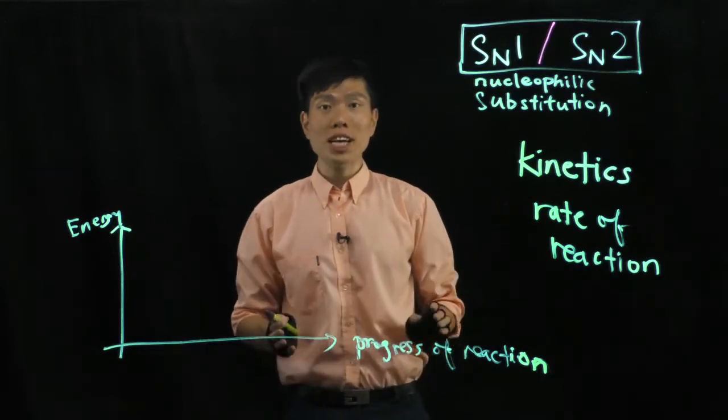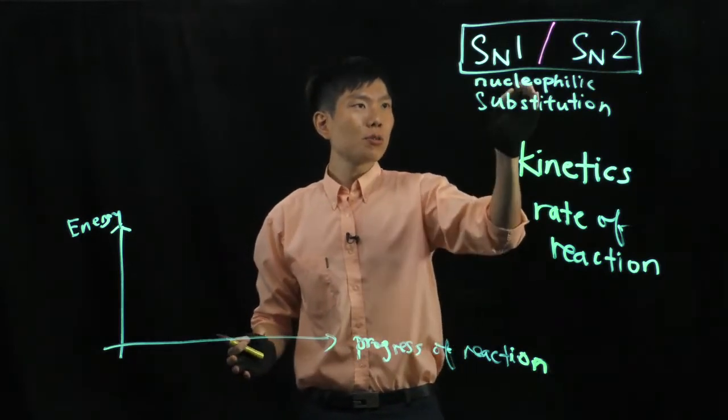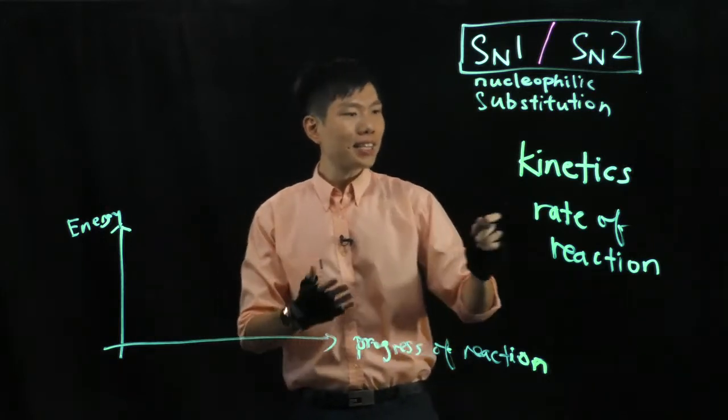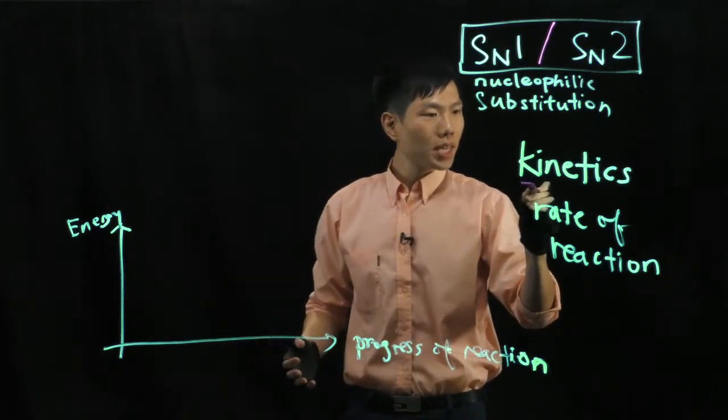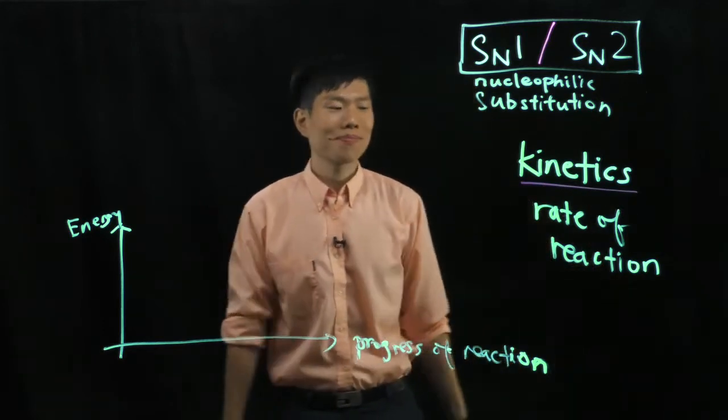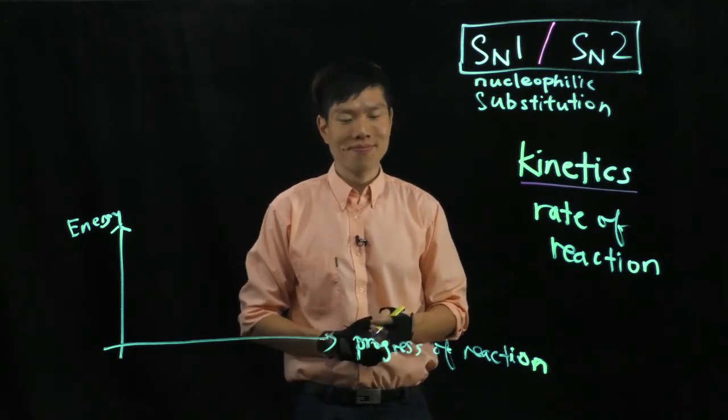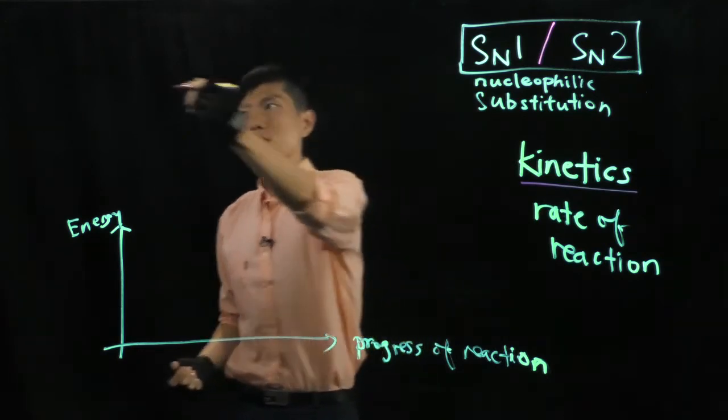Over here, we will be talking about the kinetics of a nucleophilic substitution, SN1. Now, when we talk about kinetics in chemistry, what we mean is actually the rate of reaction, how fast a reaction occurs, and what are the factors that affect it. So, let's start with SN1 first.